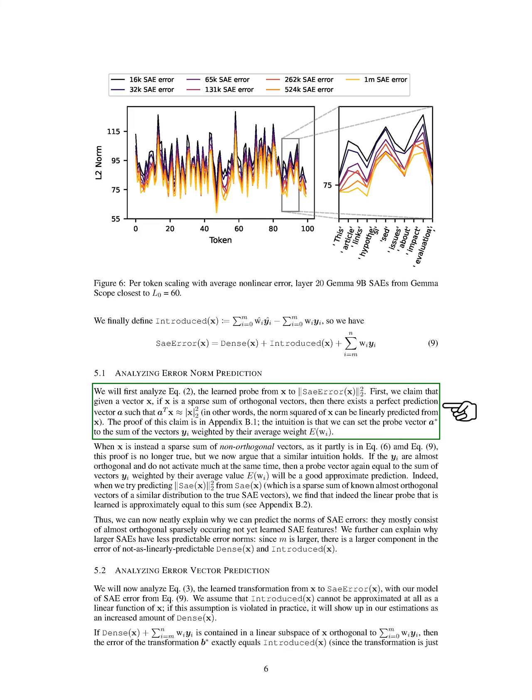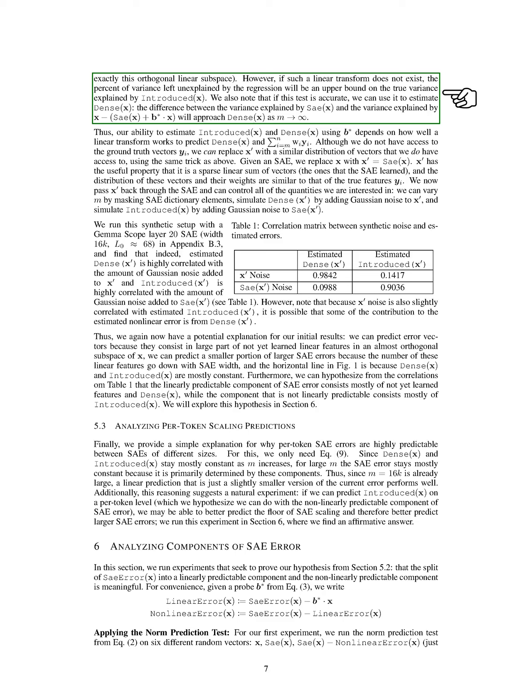Next, we analyze the learned probe that predicts the error norm from our input. We claim that if our input is a sparse sum of orthogonal vectors, we can find a perfect prediction vector that approximates the squared norm of the input, setting this probe vector as a weighted sum of the learned vectors. However, if the input consists of non-orthogonal vectors, this perfect prediction may not hold, but a similar approach can still provide a good approximation if the vectors are nearly orthogonal. We also explore why larger SAEs have less predictable error norms: as the number of features increases, the error from the dense component becomes larger and less predictable. Moving on to the prediction of the error vector, we assume that the introduced component cannot be approximated as a linear function of the input.